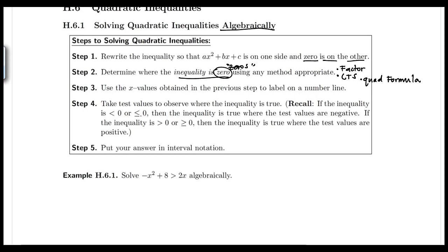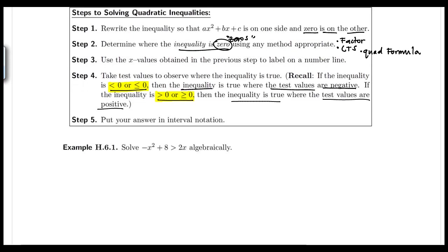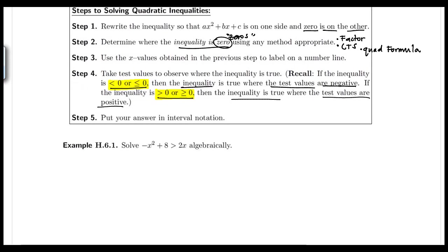In step four, take test values on each side of the zeros. If the inequality is less than zero or less than or equal to zero, then the inequality is true wherever the test values are negative, because values less than zero are negative numbers. If the inequality is greater than zero or greater than or equal to zero, then the inequality is true where the test values are positive. Now let's try the first example: solve negative x squared plus eight greater than 2x algebraically.